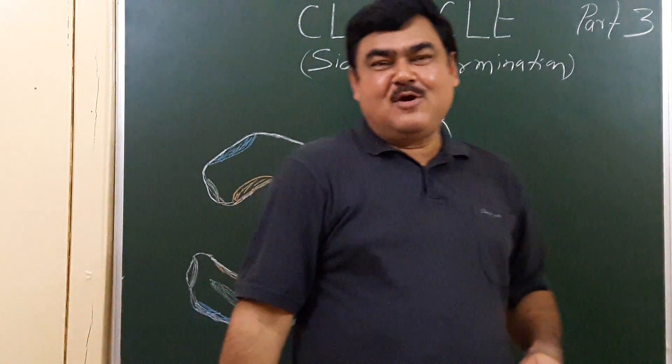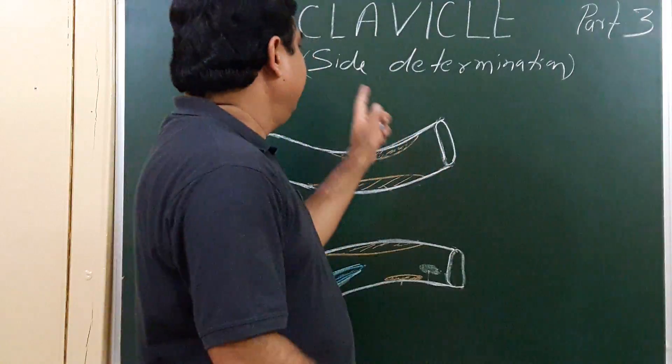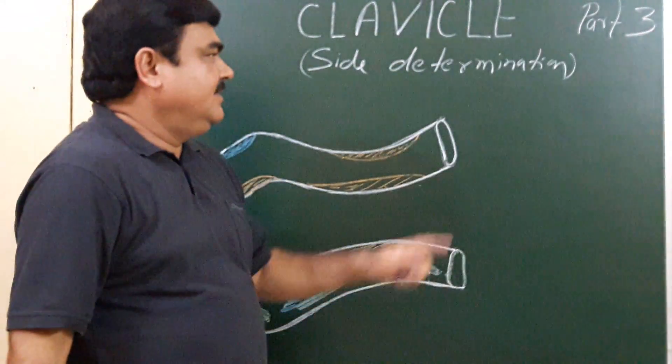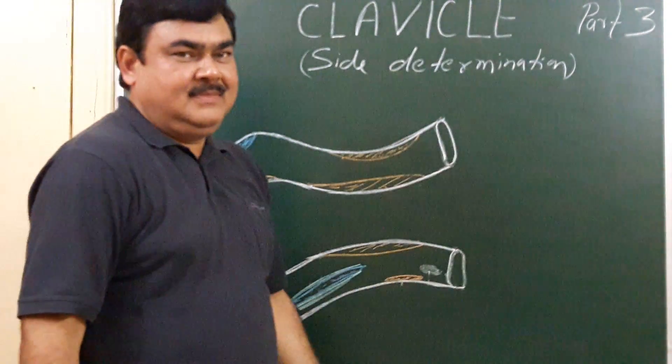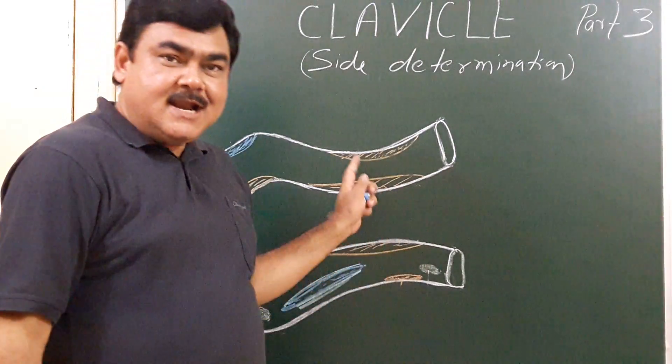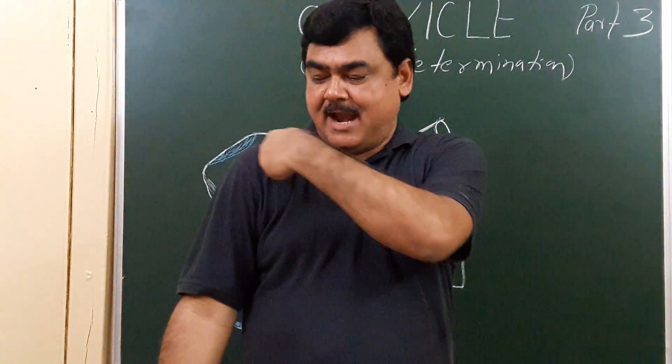Now we will discuss the determination of the side - side determination, part 3. This diagram shows a right clavicle.